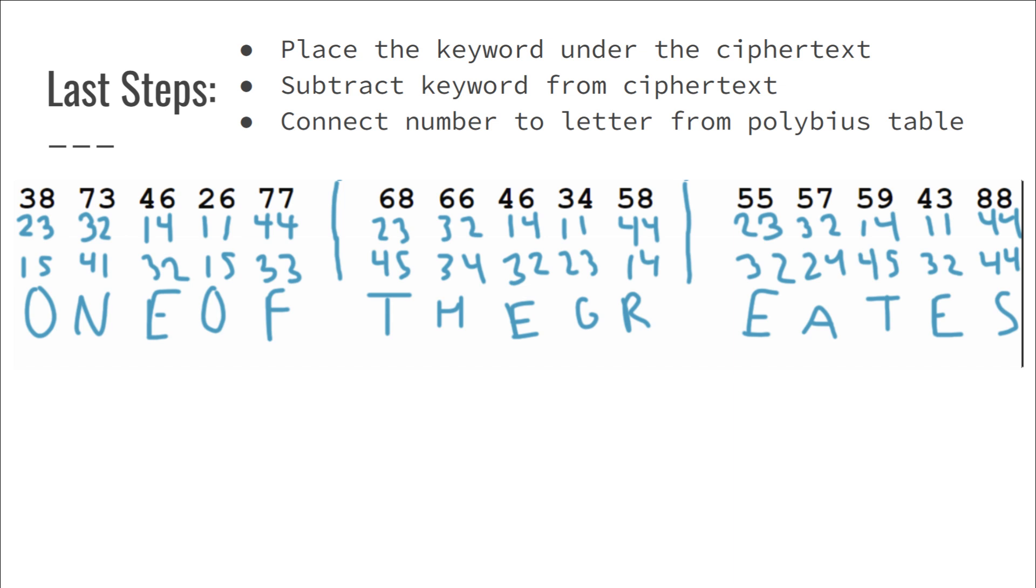If the number ends in any number that is zero six seven eight or nine or contains any of those numbers then a mistake has been made and this is not a letter. Now after we have each number as our differences we will now match it up to our polybius table and find each letter.